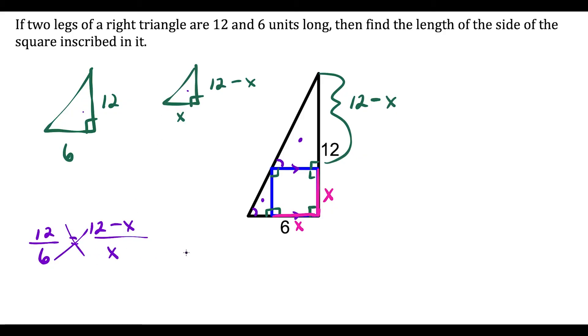Now we just cross multiply and we're going to have 12x equals—6 times 12 is 72 minus 6 times x, which gives us minus 6x.